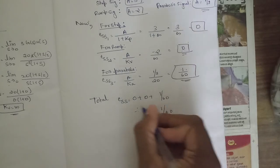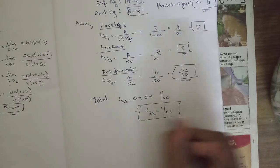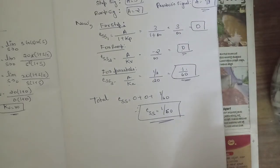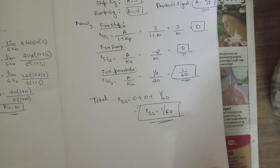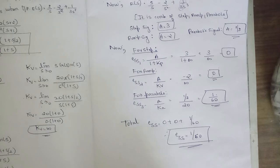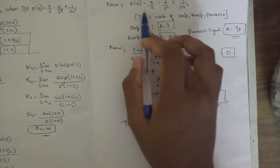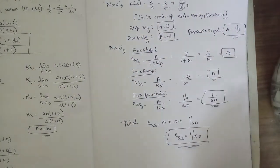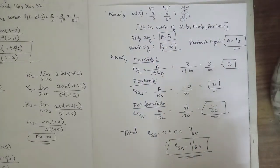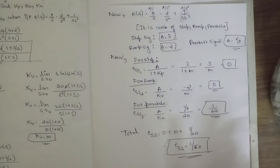The total steady-state error is ess = ess₁ + ess₂ + ess₃ = 0 + 0 + 1/60 = 1/60. The only change in this problem compared to the previous one is that the input is represented in the Laplace (s) domain rather than the time domain.